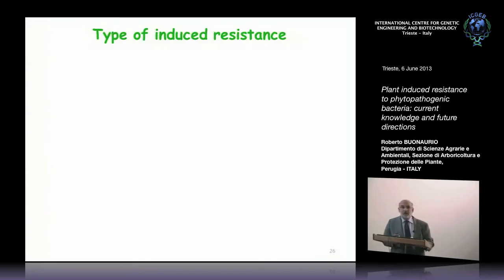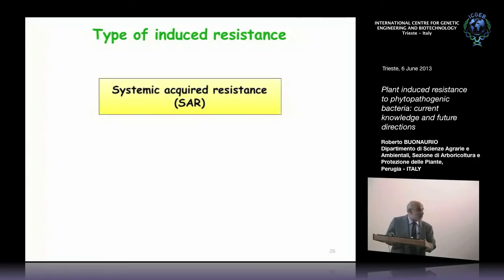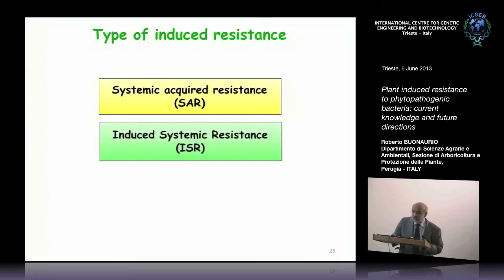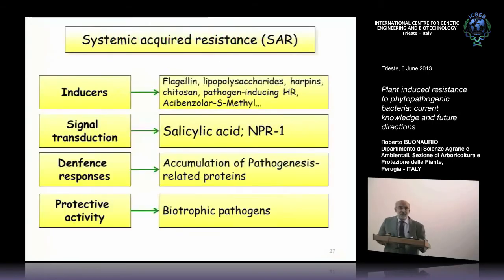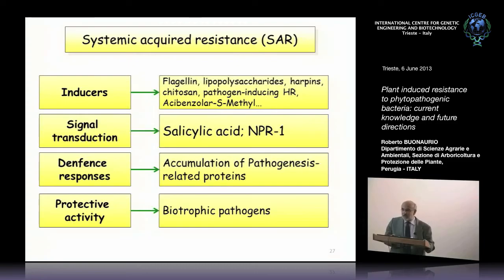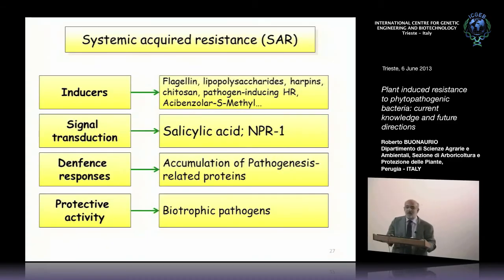We know at least three types of induced resistance: Systemic Acquired Resistance — SAR — Induced Systemic Resistance — ISR — and beta-aminobutyric acid induced resistance — BABA-IR. During SAR, the inducers are many compounds: flagellin, lipopolysaccharide, harpins, chitosan, pathogens inducing a hypersensitive reaction, and other chemical compounds such as acibenzolar-S-methyl and many others.